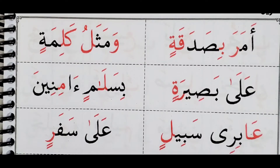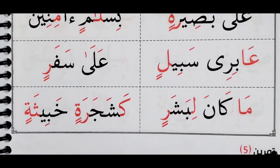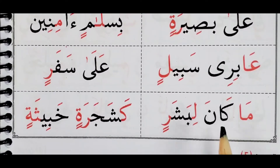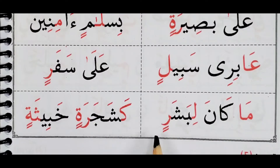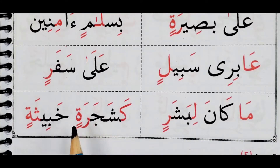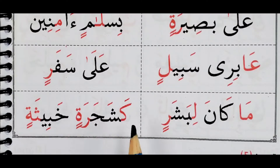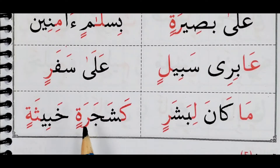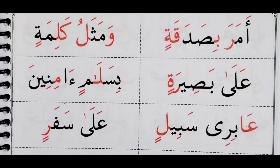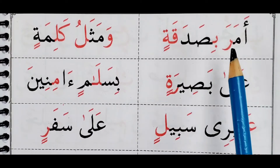Khabithathin. Okay, we have ma kana — I'm sorry about that. Ma kana libasarin. Kha shajaratin khabithathin. Let's repeat from the beginning one more time, I'm sorry about that — hiccups there.